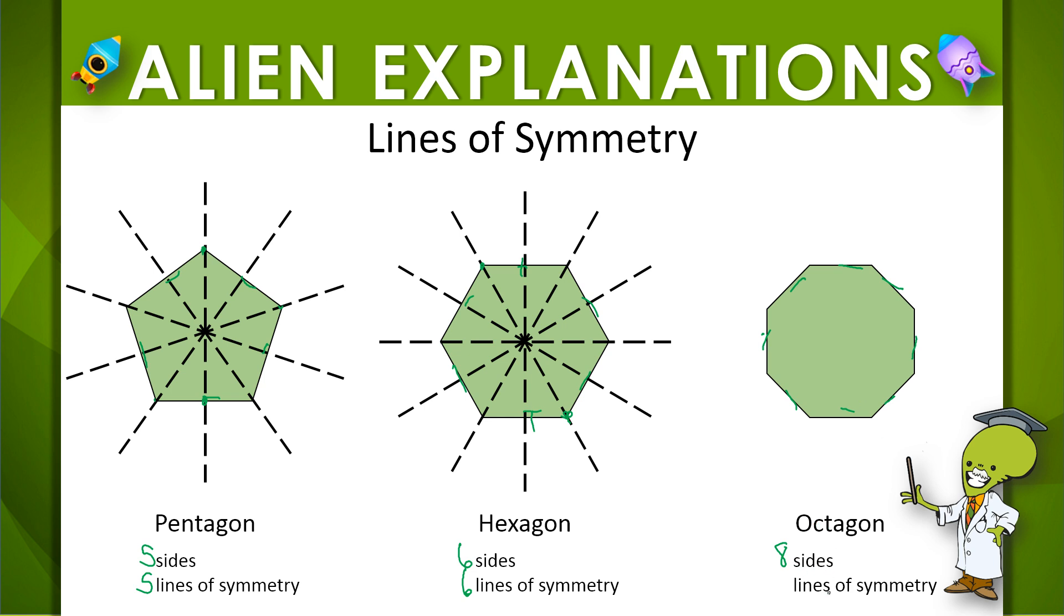Well if there's 8 sides, let's see if there's 8 lines of symmetry. 1, 2, 3, 4, and then 5, 6, 7, 8.